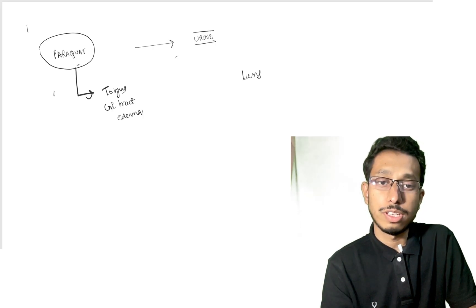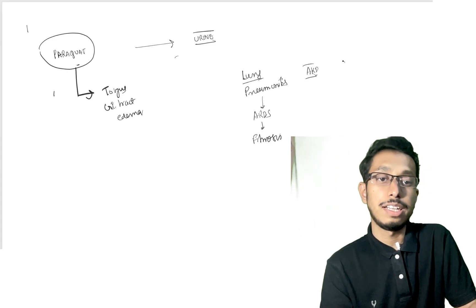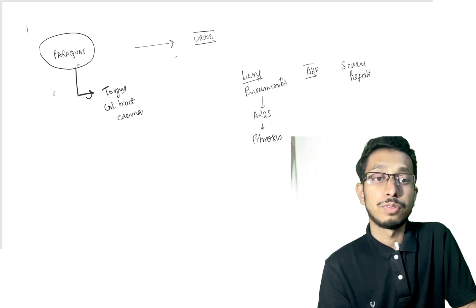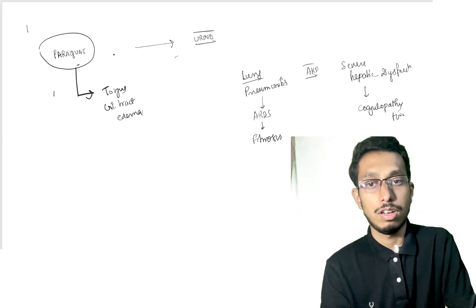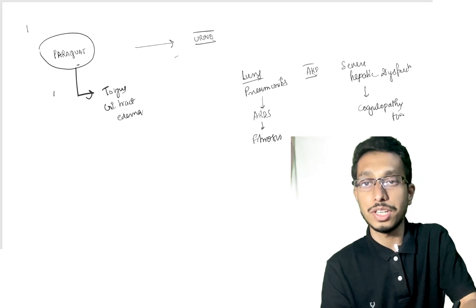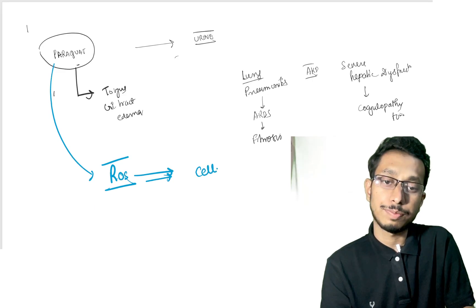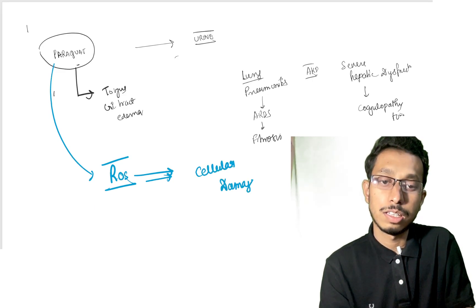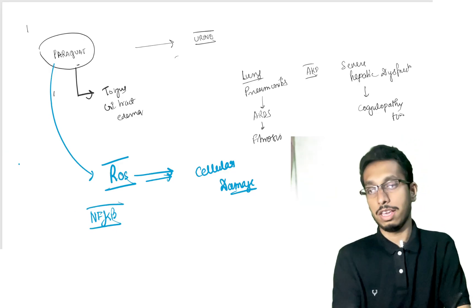It affects the lungs causing pneumonitis which later progresses to ARDS and fibrosis. At the kidney level it causes AKI and severe hepatic dysfunction which can present as coagulopathy. Paraquat exerts its effects through formation of reactive oxygen species and this exerts cellular damage. Nuclear factor kappa B also helps in this cellular damage.